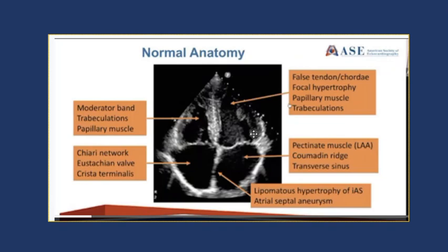In the left atrium, you can have very thickened pectinate muscles in the left atrial appendage, which if you're clearing somebody for a TEE cardioversion or pre-ablation can look like a thrombus. It's good to get different angles of the LAA to make sure what you're looking at is definitely the pectinate muscle and not a thrombus hiding out in the left atrial appendage.